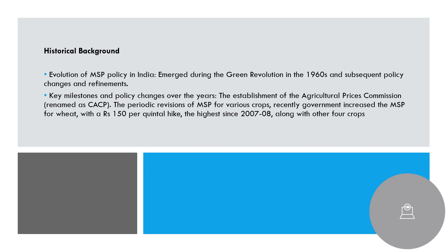Going back to the 1960s when the Green Revolution happened, subsequent policy changes followed. In recent news, the government has hiked MSP — wheat saw one of the highest hikes, at 150 rupees per quintal higher, at levels comparable to 2007-2008. Four other crops also received MSP hikes. The Agricultural Prices Commission was established, which was later renamed as CACP, and it recommends the prices for particular crops under MSP.